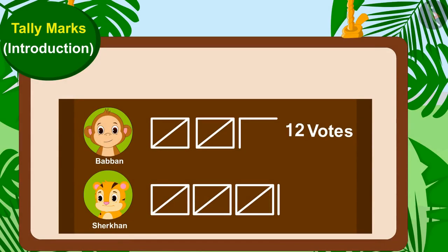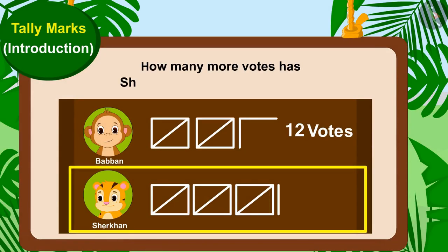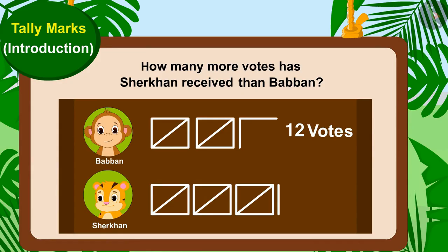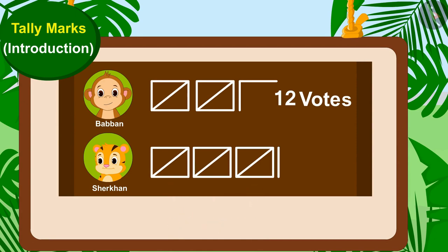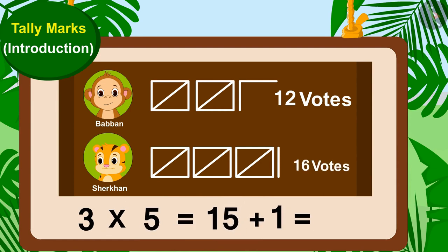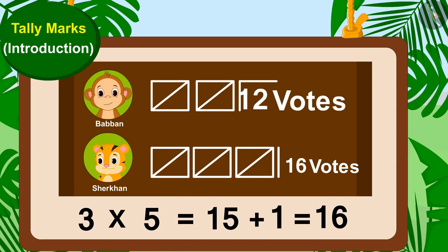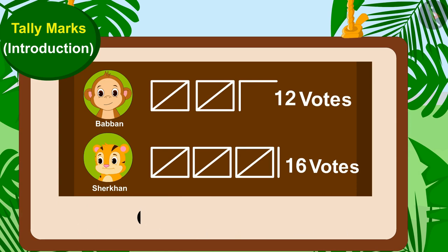Children, can you tell how many more votes has Shere Khan received than Babban? Shere Khan's votes consist of three groups of tally marks and one line. Shere Khan has got three times five, fifteen, plus one — sixteen votes. And Babban has got 12 votes. This means Shere Khan has got four votes more than Babban.